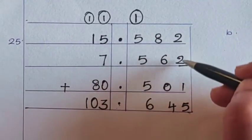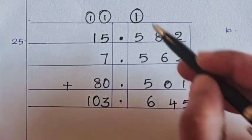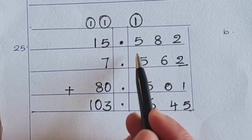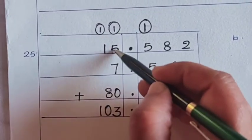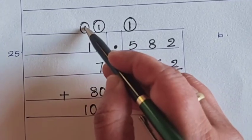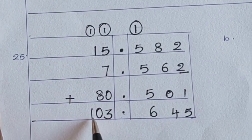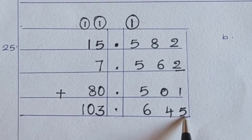2 plus 2 plus 1, 5. 8 plus 6 is 14, one carry over. 5 plus 5 plus 5 and 1, 16. One carry over again. You can give that carry over to whole number part. 5 plus 1 plus 7 is equal to 13. Again, 1, 1 plus 1 plus 8 is equal to 10. 103.645 is the answer.